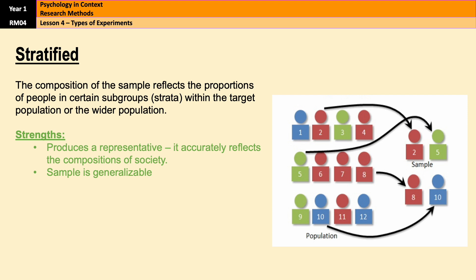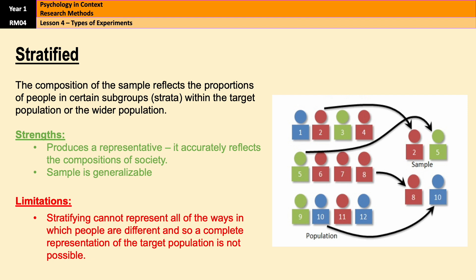A strength of stratified sampling is that it ensures all relevant subgroups are represented, making it highly representative of the population, so the sample should generally be generalisable. However, limitations include the process being very time consuming and requiring detailed knowledge about the population's characteristics in order to properly divide it into strata. Also, it's not possible to represent all the ways in which people differ within a population, so you can't represent the target population in its entirety.